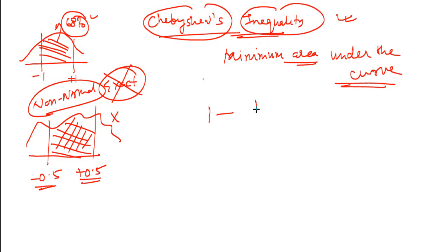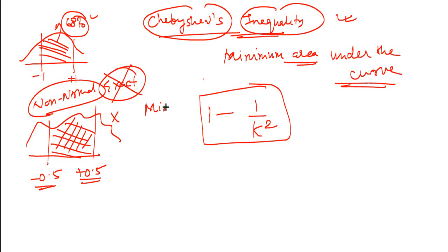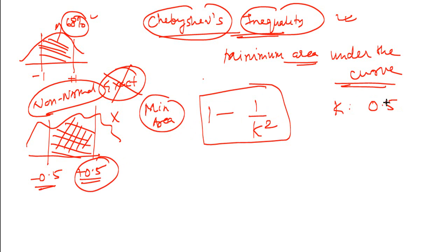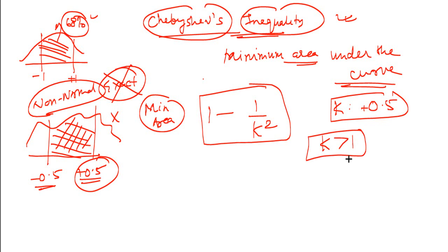The Chebyshev's inequality is written as 1 minus 1 by k squared. It says that the minimum area would be 1 minus 1/k², where k is the number of standard deviations from the mean. Note that k should be greater than 1 — this is the requirement. k can be any value but it has to be greater than 1.